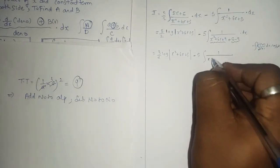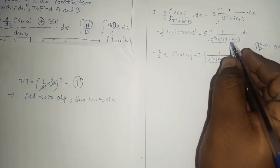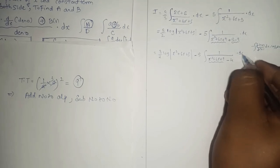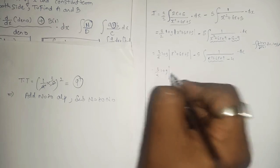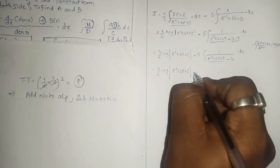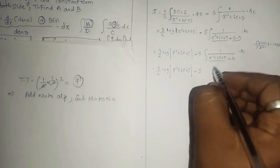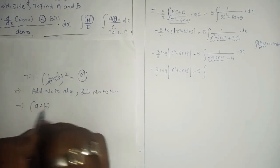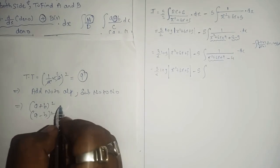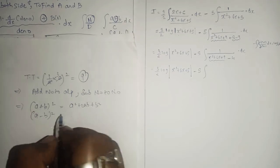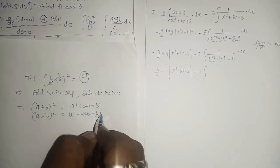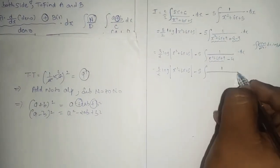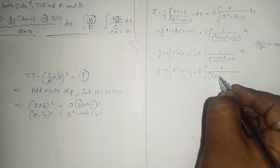We get x squared plus 6x plus 9 minus 4. Continue writing this step. For x squared plus 6x plus 5 we add and subtract: x squared plus 6x plus 9 minus 4. This converts into x plus 3 the whole square minus 2 squared — using the identity a squared plus 2ab plus b squared equals (a+b) squared.